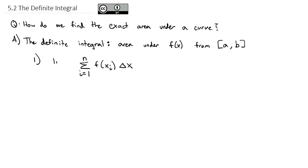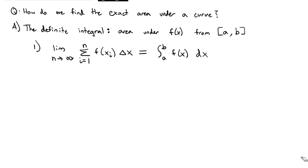In theory, if we take the limit as n goes to infinity and have an infinite number of rectangles, there should be no more error — that gives us the exact area. We represent this exact area with the integral symbol, which is kind of a stretched-out S, from A to B of the function dx. Let's look at how we can use this definition to find an exact definite integral.